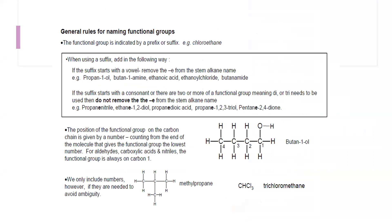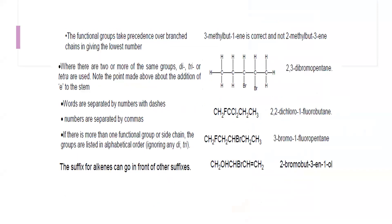In the last session we discussed the important rules for naming organic compounds. Words are separated from numbers by dashes, and numbers are separated from each other by commas. If there are more than two functional groups or side chains, they are listed in alphabetical order, ignoring prefixes like di or tri.